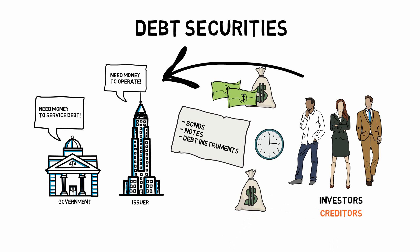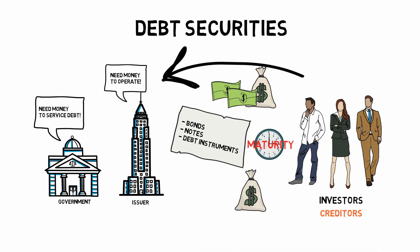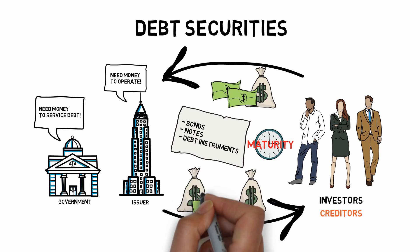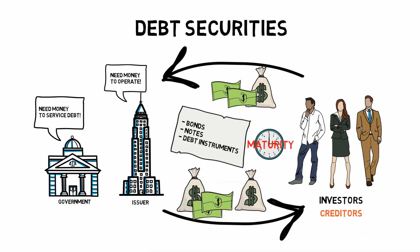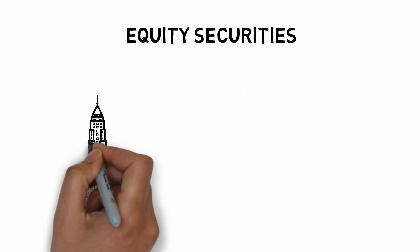At the end of the loan period, also known as loan maturity, the issuer is required to repay the principal balance. Principal and interest payments are also referred to as debt service obligation. Now let's look at equity securities.